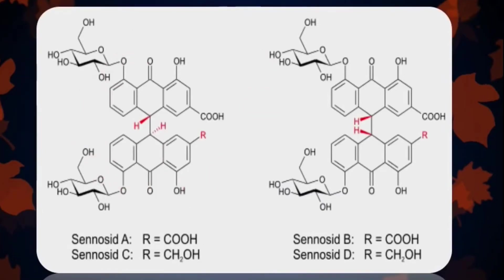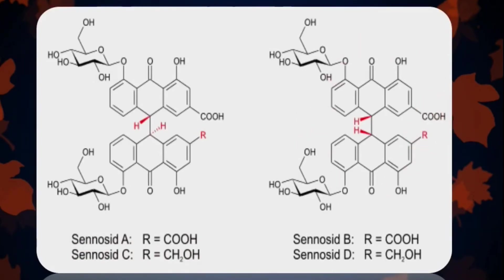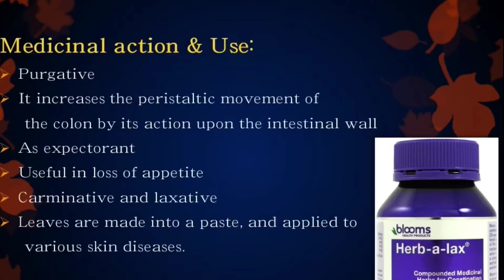Here we can see the structures of different glycosides present in Senna. This is the structure of sennoside A or C. If you replace the R group with a carboxyl group, this structure becomes sennoside A; and if you replace this R group with a CH2OH group, it becomes sennoside C. And if you replace this R group with a carboxyl group it becomes sennoside B, and if you replace this R group with CH2OH, it becomes sennoside D. Senna is used as a purgative; it increases the peristaltic movement of the colon by its action upon the intestinal wall. It is also used as an expectorant, is useful in loss of appetite, and leaves are also made into a paste and applied to various skin diseases.